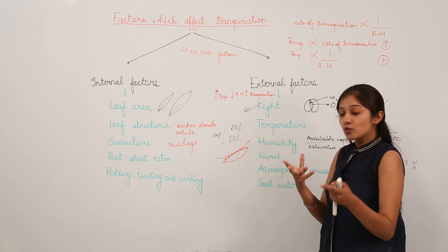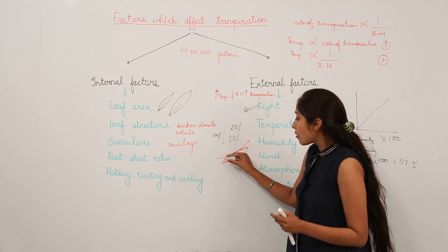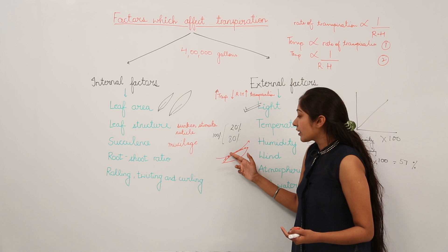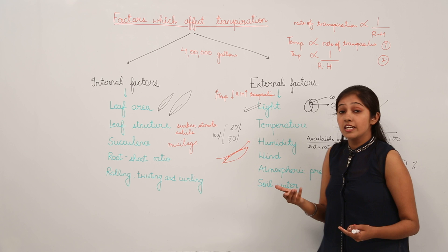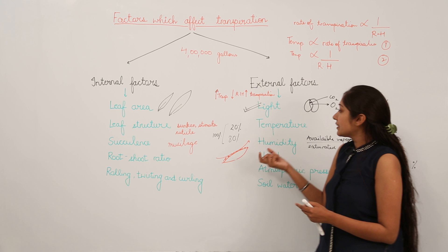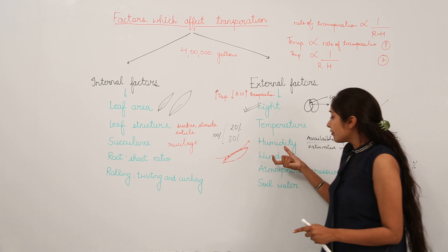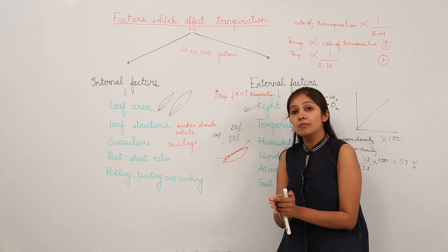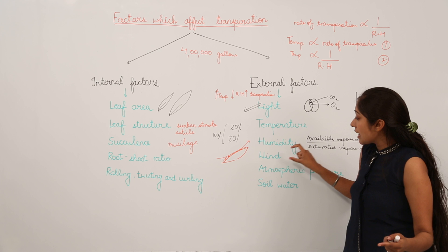Regarding wind: when water transpires, it collects near the leaves and forms a boundary layer. When wind of appropriate medium velocity blows, it carries the water vapor away and increases transpiration rate. When wind velocity is very slow or very fast, it adversely affects transpiration and can lead to closure of stomata. We need appropriate temperature and appropriate wind velocity for effective transpiration in plants.